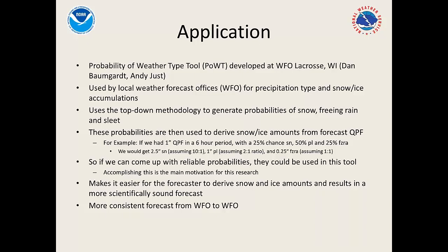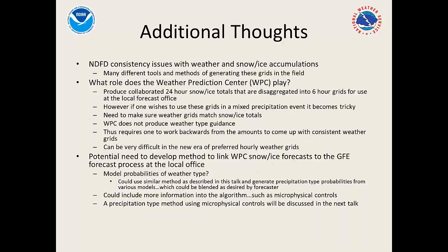Improving these probabilities could allow this tool to provide a scientifically sound forecast giving the most likely amounts of snow, sleet, and freezing rain. If everyone used it, forecasts would be more consistent from WFO to WFO. Consistency is a big topic, and while things have improved — including new super blends with QPF in the central region — snowfall collaboration is still dependent on precipitation type.